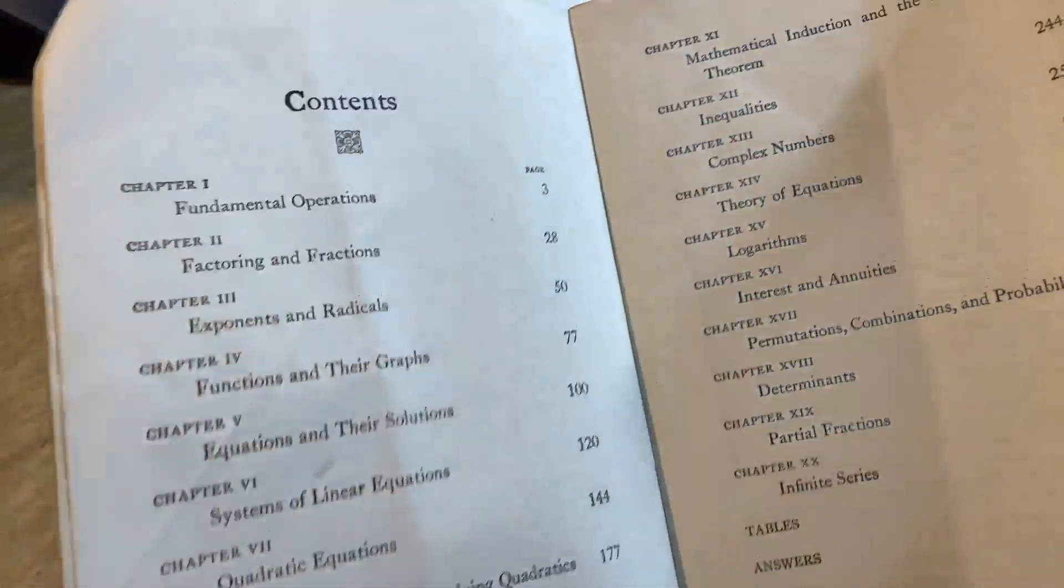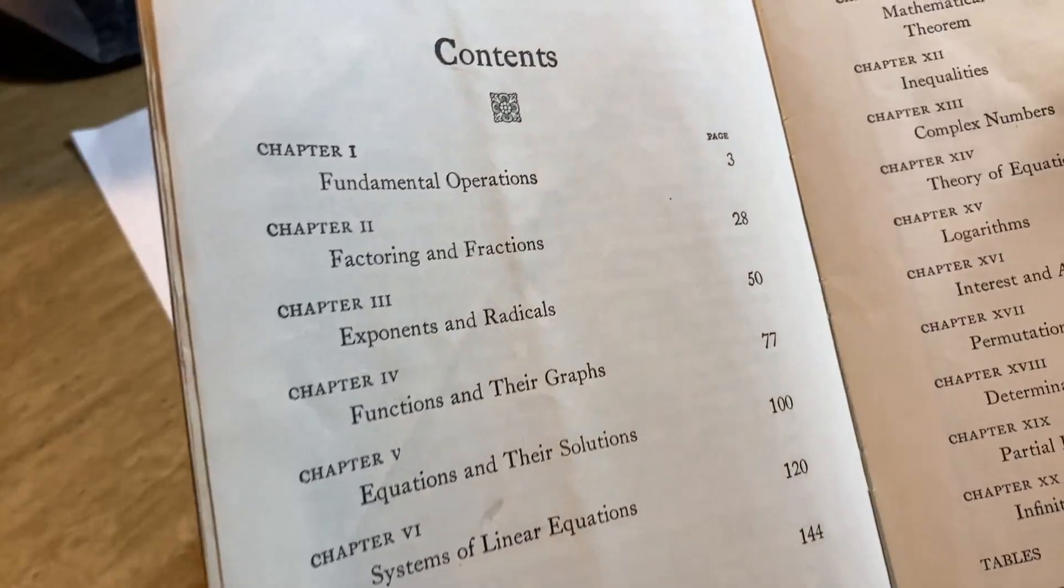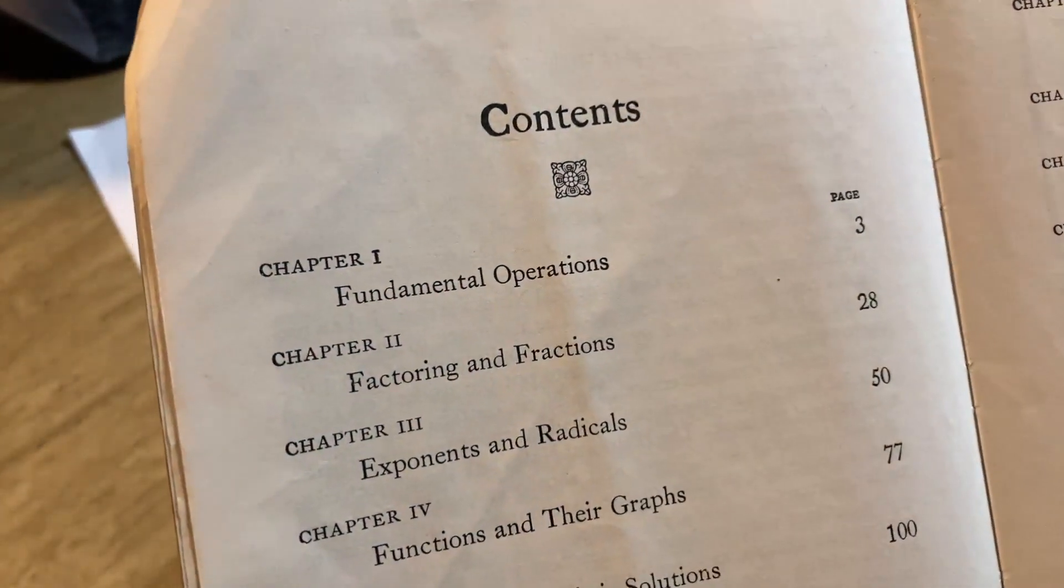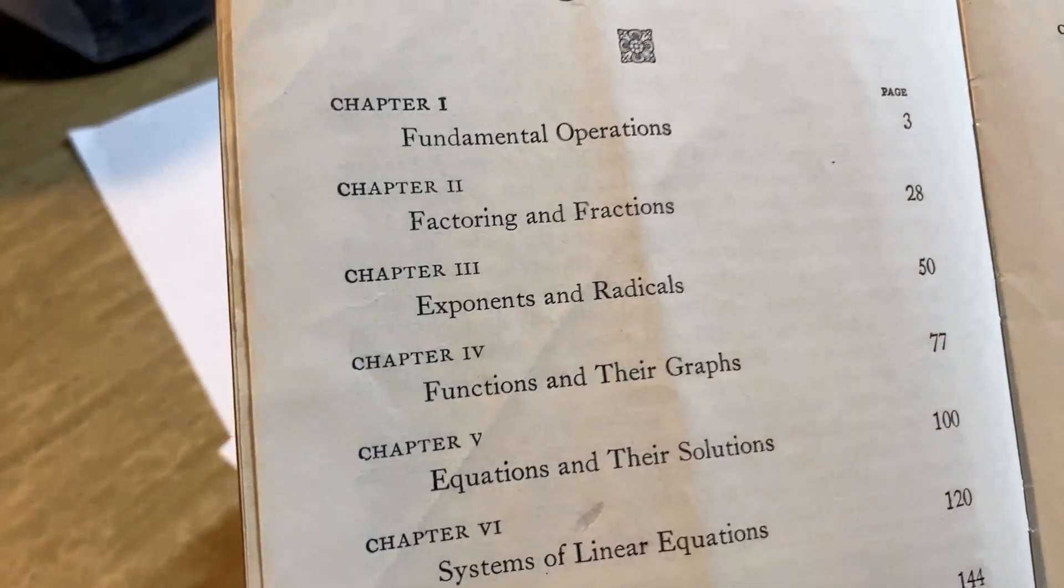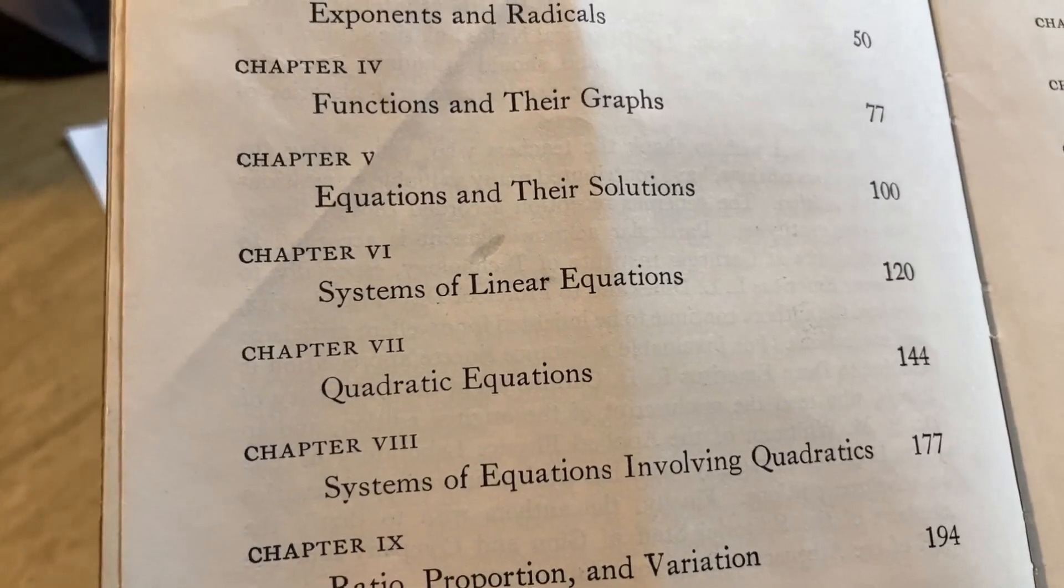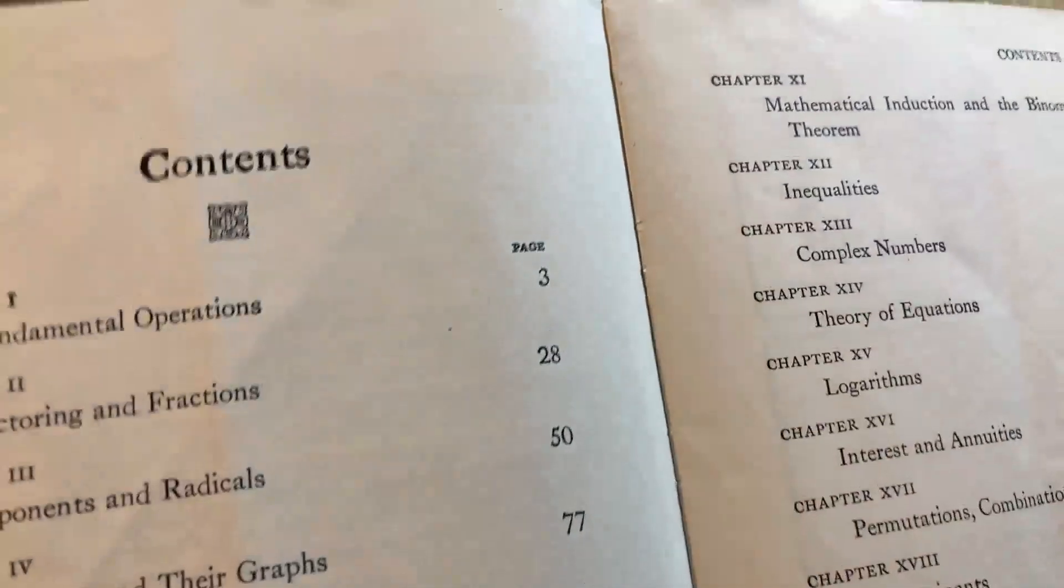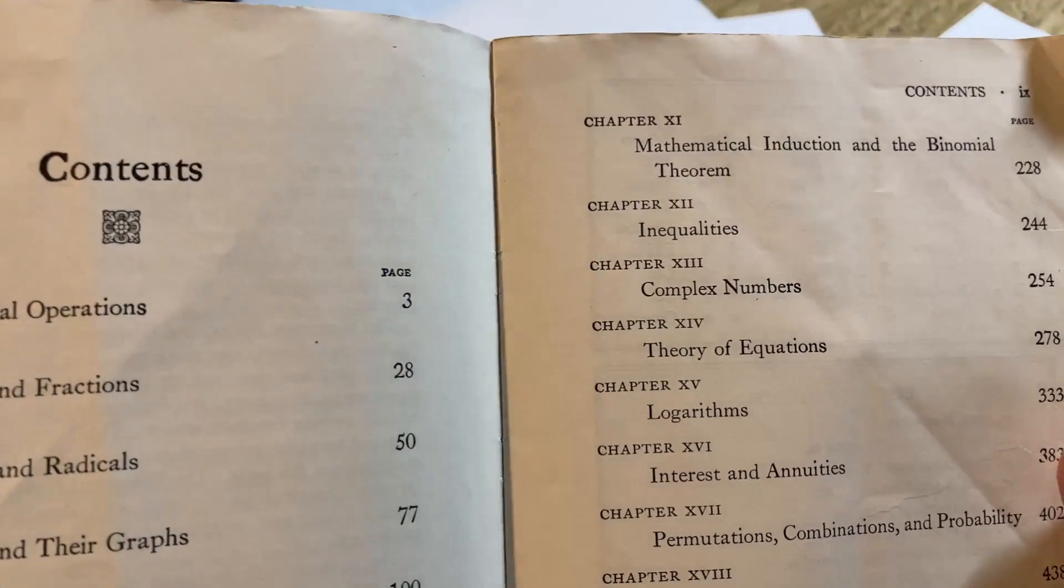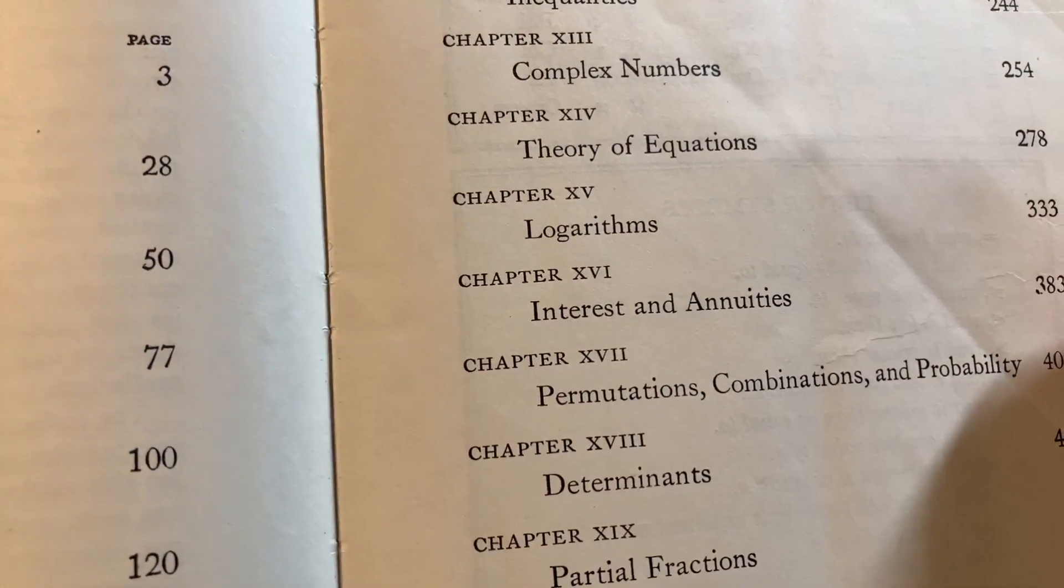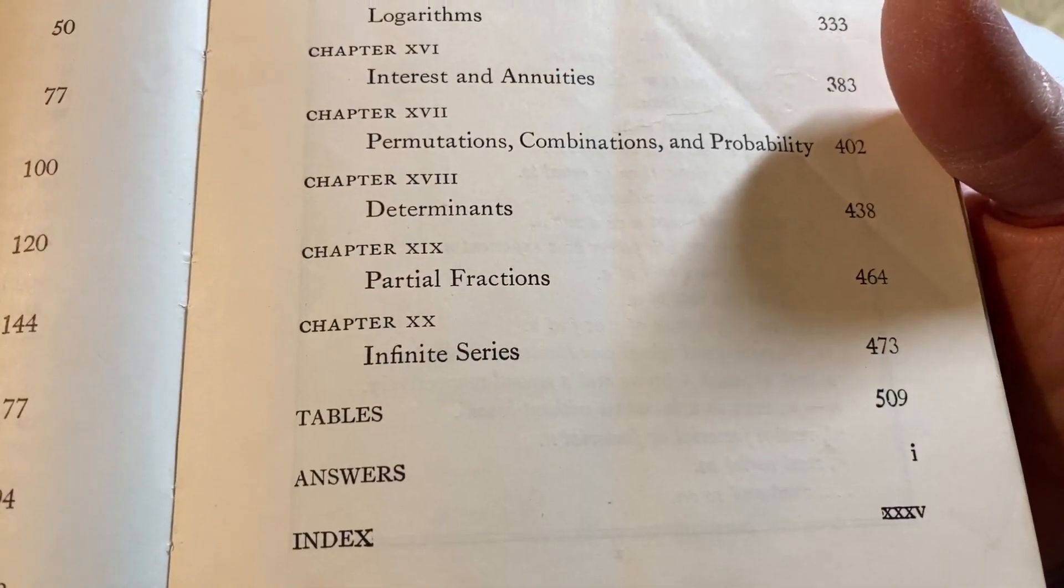If you know some math, you'll be pleasantly surprised by this book. It does also have some interesting examples. I do feel like the difficulty level is slightly harder than modern college algebra books, which makes sense. Over time, books have gotten a little bit easier. But the explanations, in some cases, have gotten better. Fundamental operations, factoring and fractions, exponents and radicals, functions and their graphs, equations and their solutions, systems of linear equations, quadratic equations, systems of equations involving quadratics, ratio proportion and variation, progressions, mathematical induction and the binomial theorem, inequalities, complex numbers, theory of equations, logarithms, interest in annuities, permutations, combinations, and probability, determinants, partial fractions, infinite series. Some tables, answers, and an index. And the index is quite good.